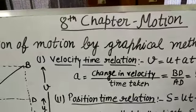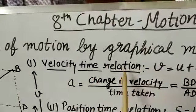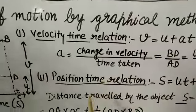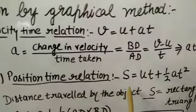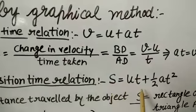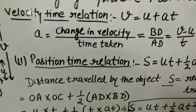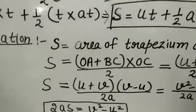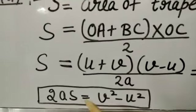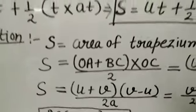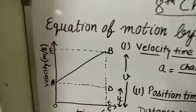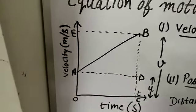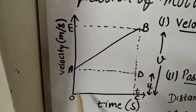We have three equations. The first is the velocity-time relation, in which the relation between velocity and time will be derived. The second is the position-time relation, in which the relation between position and time is derived. The third is the position-velocity relation — the relation between position S and velocity. All these equations can be derived by a simple graphical method, using the graph between velocity and time.